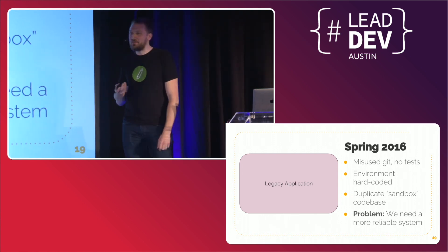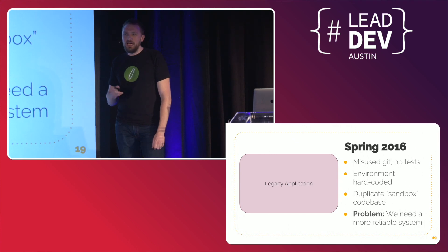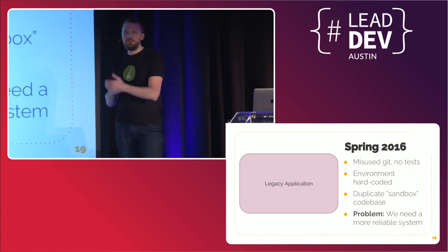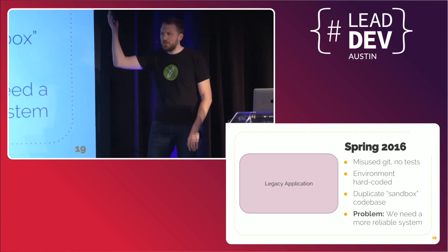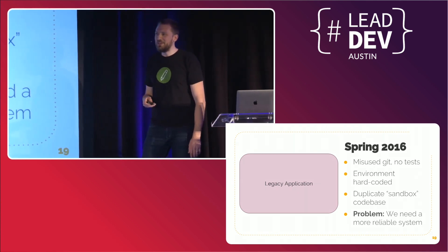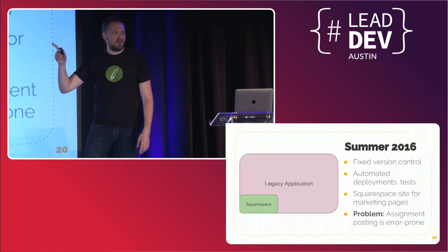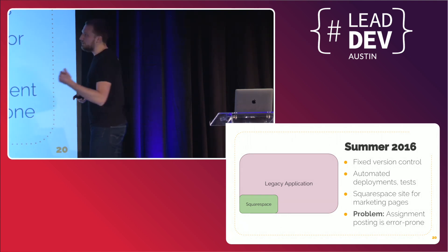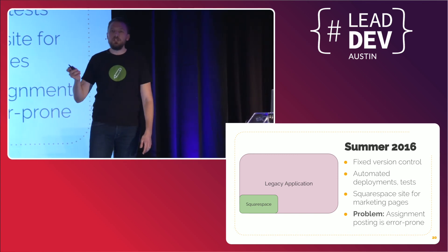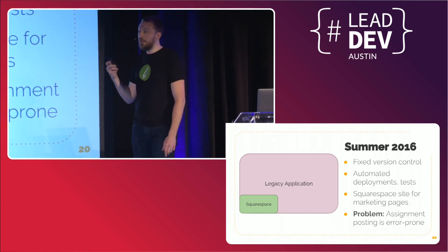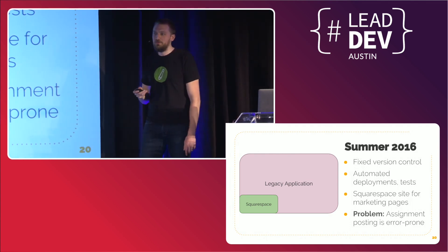They came to me and said they just need a more reliable system. We were super resource constrained and had to get this ready between summer 2016 when I joined and fall 2016 when a next batch of teachers would come in. The first thing: fixed version control — easy win. Automating deployments is another big one. When you've got a legacy app you're slowly refactoring, the biggest win is the ability to fix it quickly, because you're going to break it and you have to be okay with that.